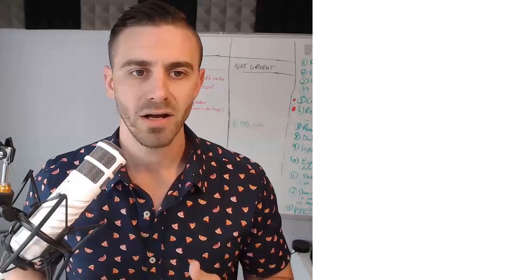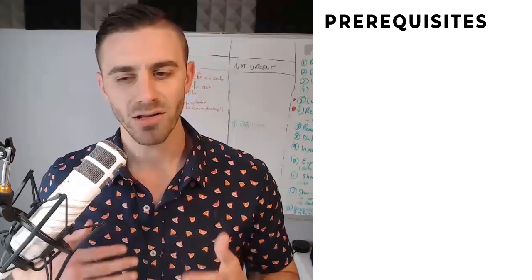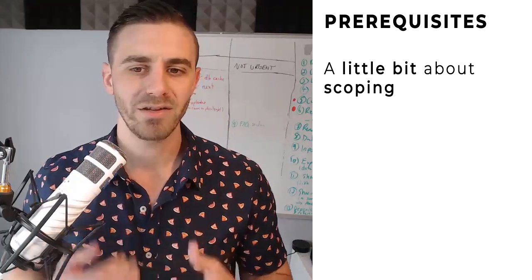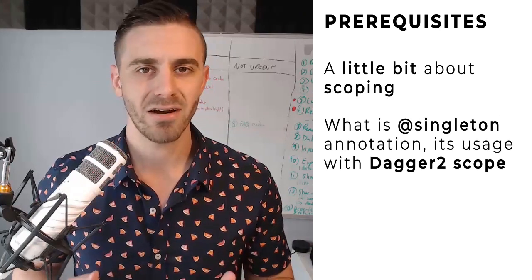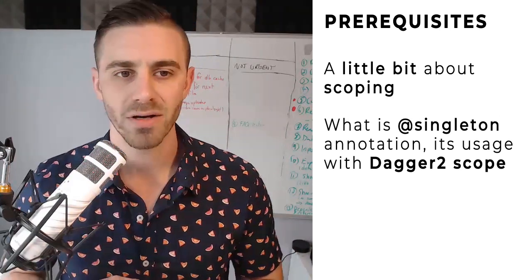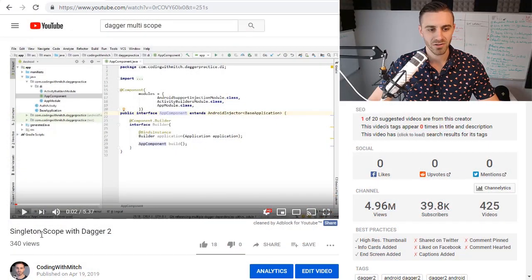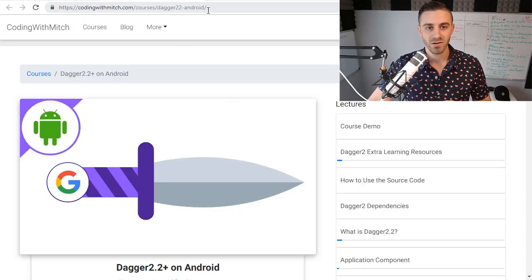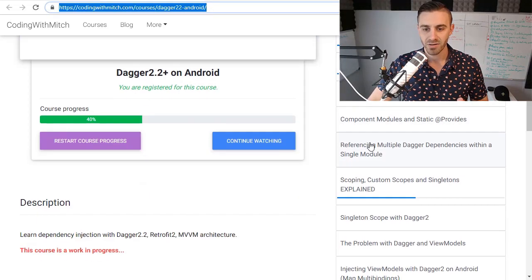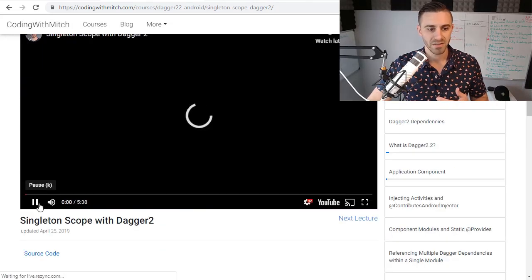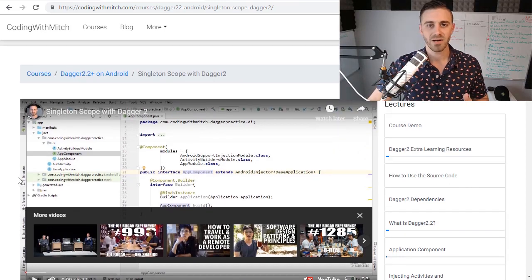Before you watch this video, I want to give you a fair warning. I expect you to know a little bit about scoping — or at least you'll benefit more if you do. The only thing I want you to know is the singleton annotation and how it's used with Dagger 2 scope. I made a video on that. If you don't know what that is, you can go to my YouTube channel and search 'Singleton Scope with Dagger 2', or go to my website and the Dagger 2 course page, and scroll down to the Singleton Scope with Dagger 2 video.